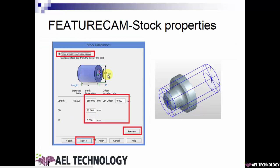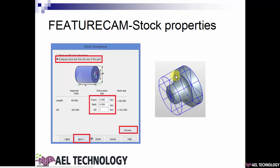When you click Next, you need to define the stock dimension. In stock dimension, you have two options: enter a specific stock dimension, or compute stock size from the size of the part. When you opt for 'enter specific stock dimension', you need to mention the length offset, OD, ID, etc., and when you click Preview you will get the resulting image. If you opt for 'compute stock size from the size of the part', you get a stock more confined to the imported model. You can add stock size on the front, back, or OD by however much you want.